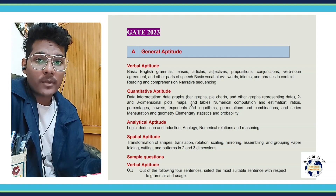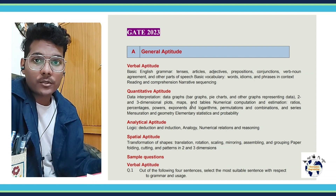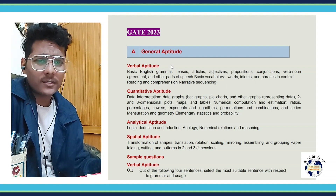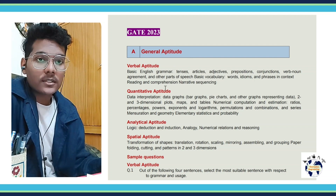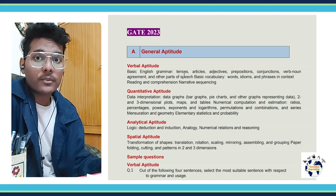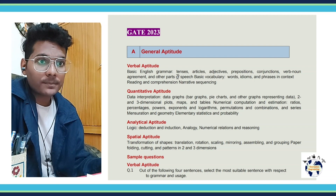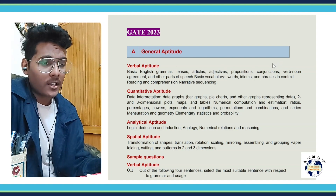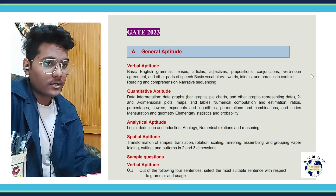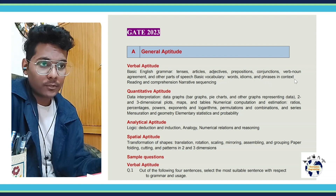To prepare for GATE Geomatics Engineering, we first need to prepare for General Aptitude. The syllabus of General Aptitude covers verbal aptitude, which covers your English part — basic English grammar including tenses, articles, adjectives, prepositions, conjunctions, and verb-noun agreement. Then we have basic vocabulary which includes words, idioms, and phrases.